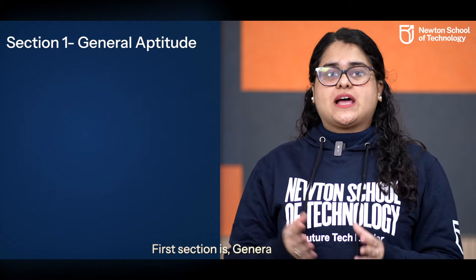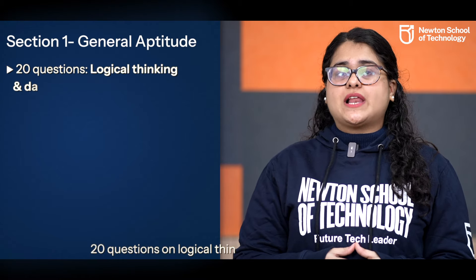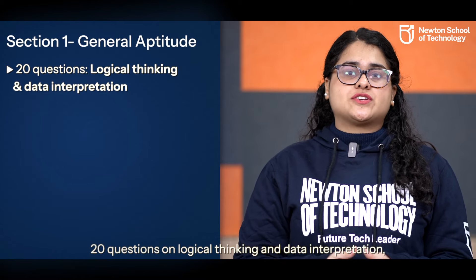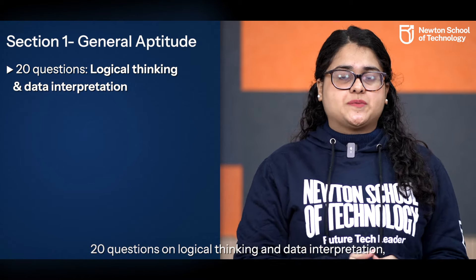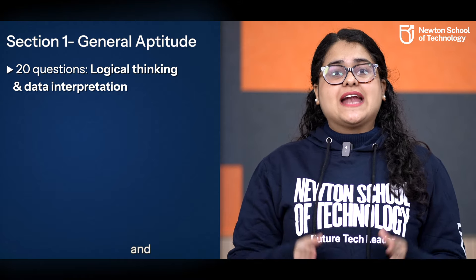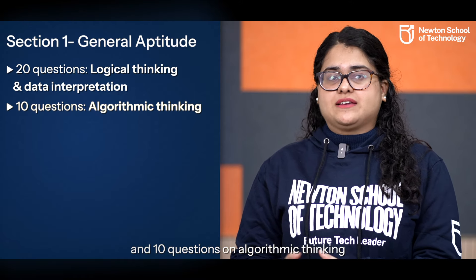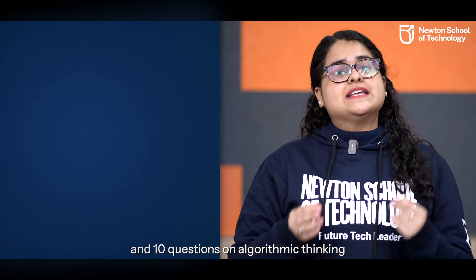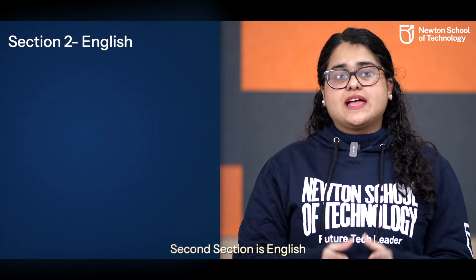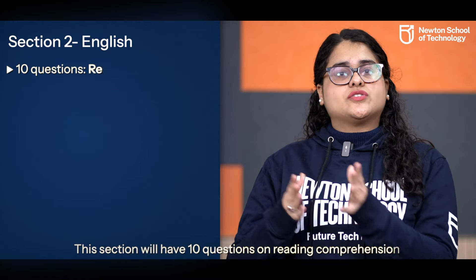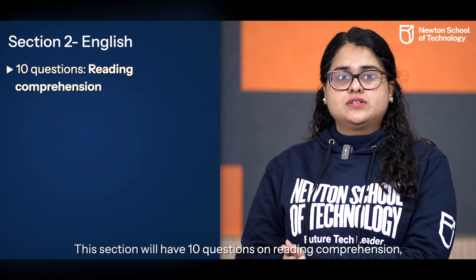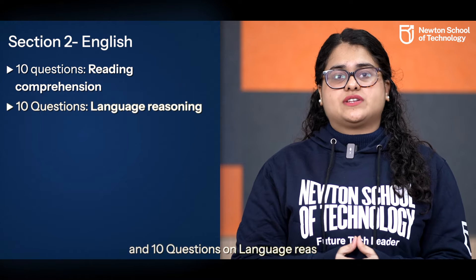Each section will be a proving ground for the skills needed in today's tech landscape. The first section is General Aptitude. This section will have 20 questions on logical thinking and data interpretation and 10 questions on algorithmic thinking. The second section is English, with 10 questions on reading comprehension and 10 questions on language reasoning.